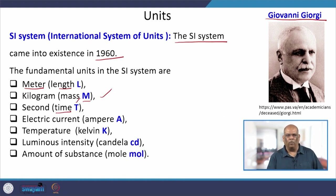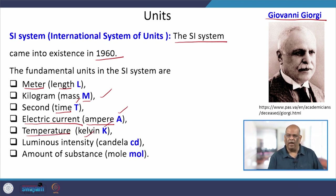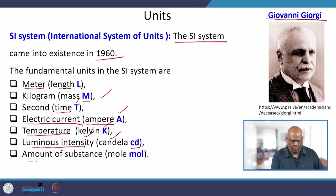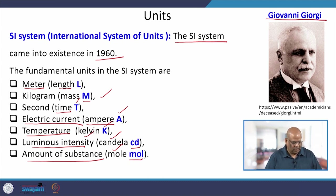There are four more fundamental units: electric current measured in ampere with dimension A; temperature measured in Kelvin with dimension K; luminous intensity in candela with dimension Cd; and amount of substance in mole with dimension mol. With these seven fundamental units, we form the SI system, which is the most widely used system of measurements.